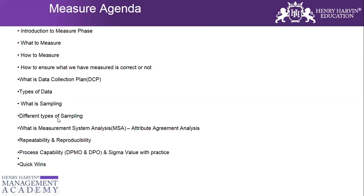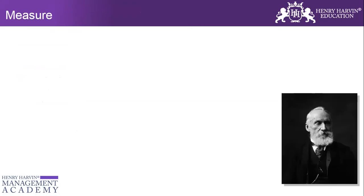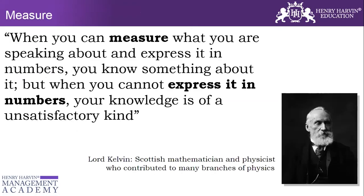We'll talk about different types of sampling techniques applicable in any Six Sigma project. Then we'll talk about Measurement System Analysis, also known as MSA, and repeatability and reproducibility. Then we'll talk about process capability — DPMO, DPO, and Six Sigma value — do certain practice exercises, and talk about quick wins as well.